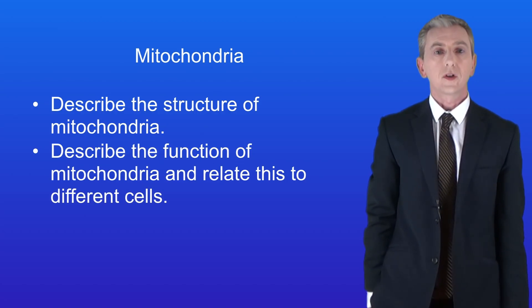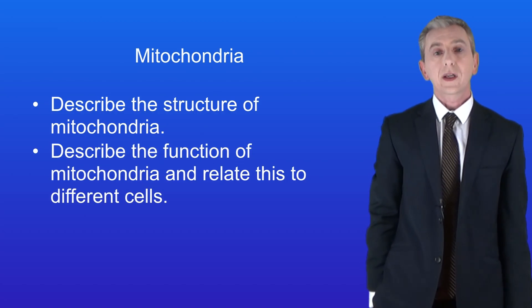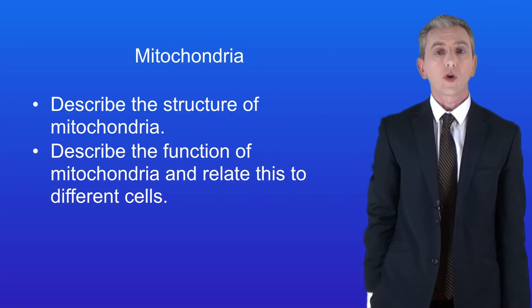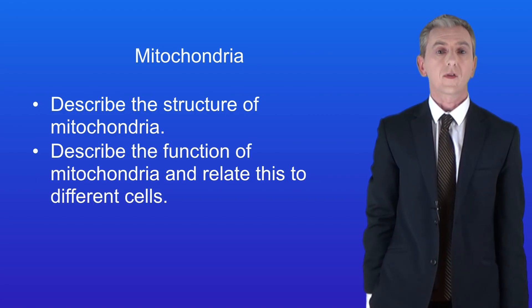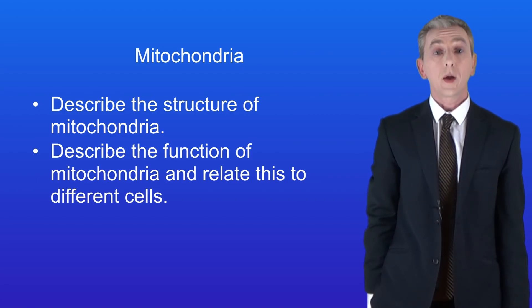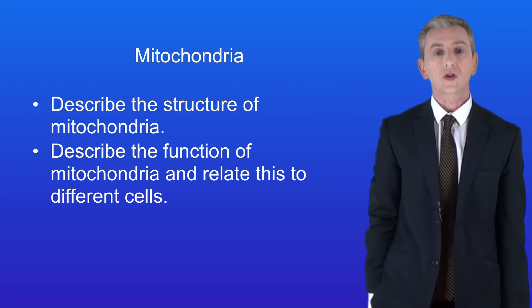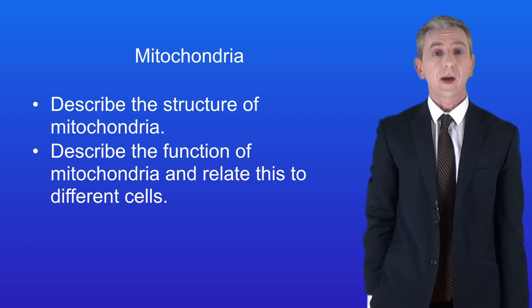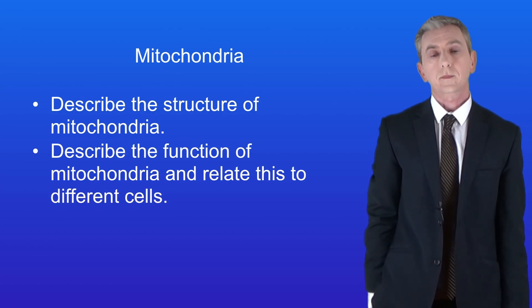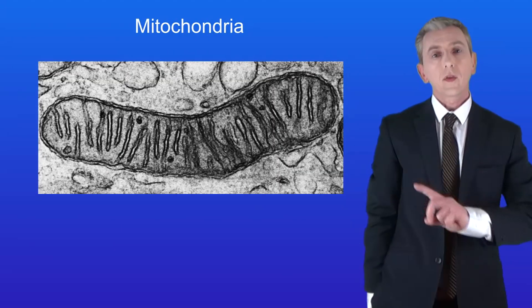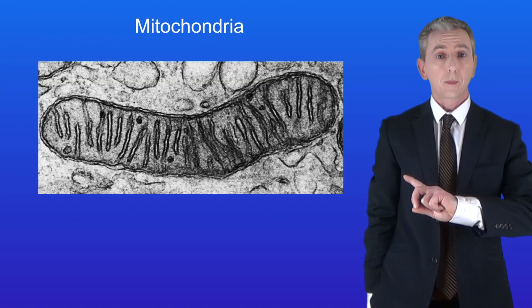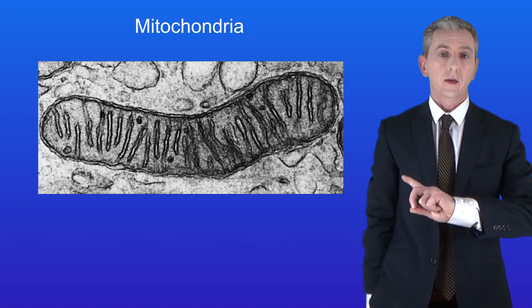In the last video we saw that we can separate the different organelles found in cells using homogenization and centrifugation. One of these organelles is a mitochondria. This shows a typical mitochondrion.